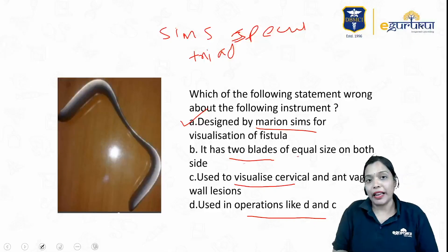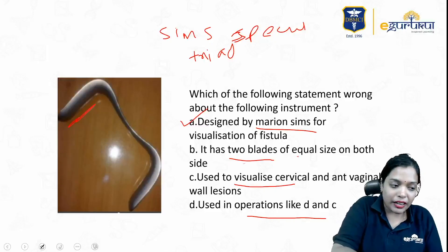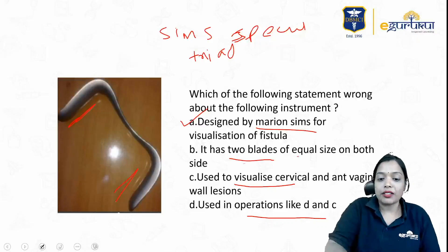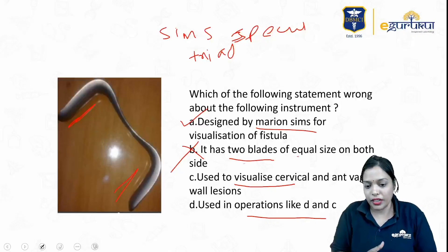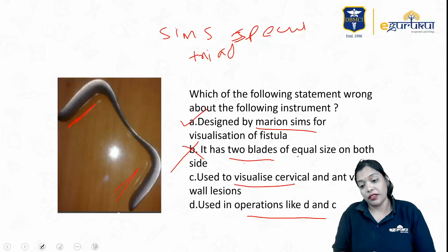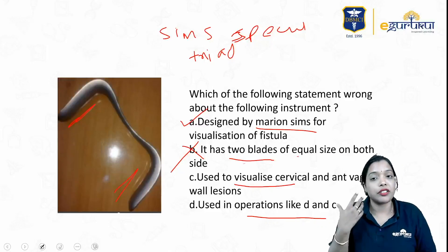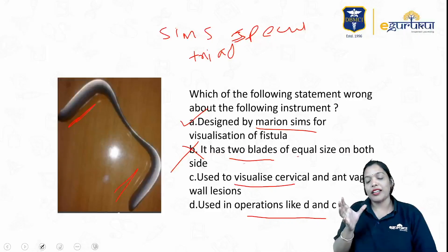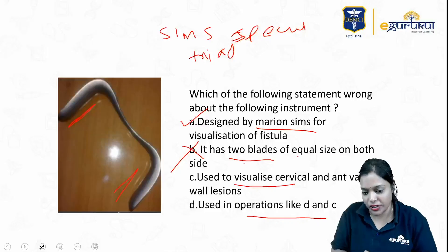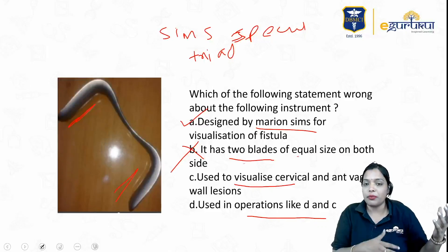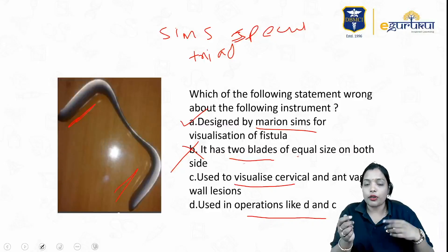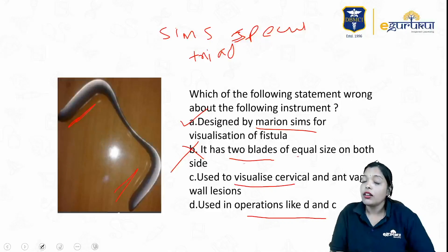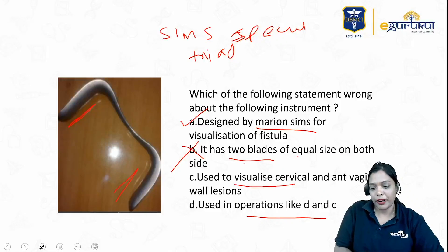It has two blades but both blades are NOT of equal size. One side is larger and one side is smaller. So 'it has two blades of equal size' is the wrong statement. It is used to visualize cervical and anterior vaginal wall lesions — correct. Use it with an anterior vaginal wall retractor for that. It is used in operations like D&C. So it's the SIMS bivalve speculum.